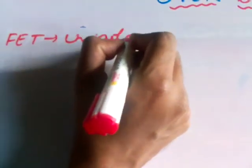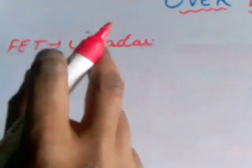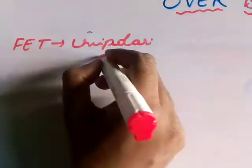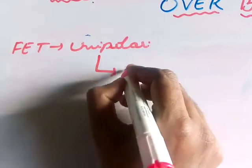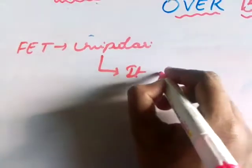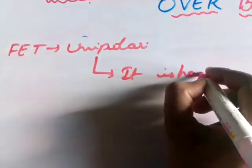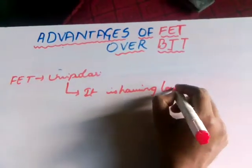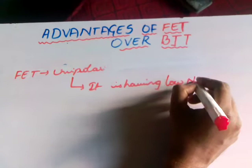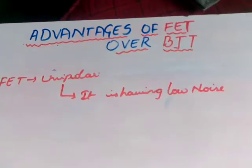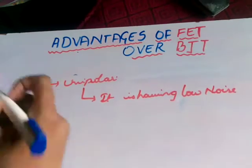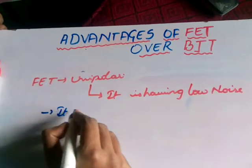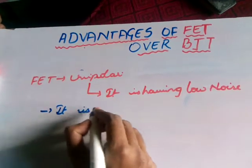Because of this property, there is a major advantage in Field Effect Transistor: it is having low noise. And another major advantage of FET is it is immune to radiation.